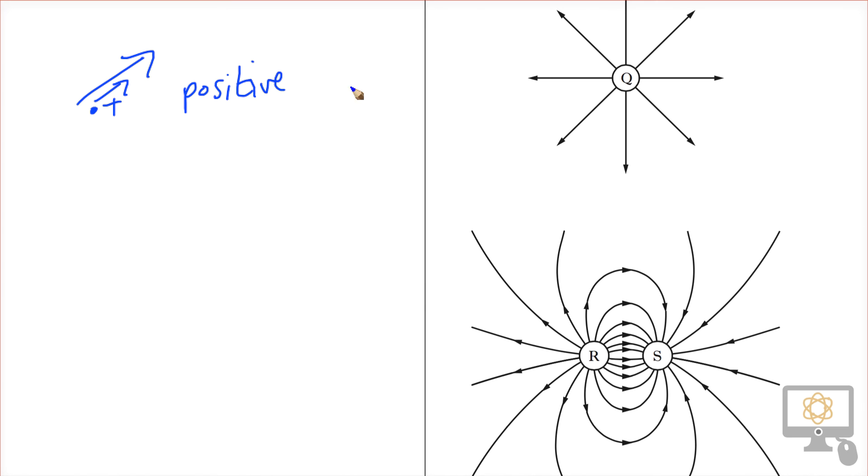A charge here would experience a force downward this way if it's a positive charge. That means this is a positive charge. These lines are traveling away from R, which means that this is a positive charge because any charges here would be repelled from it. And this must be negative because any positive charge would be attracted toward it as the field lines are showing.